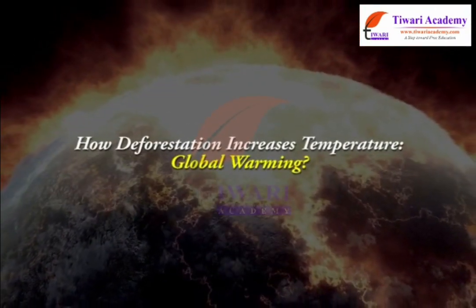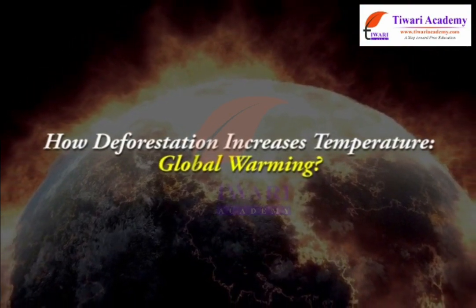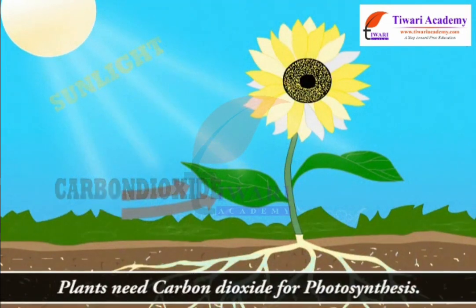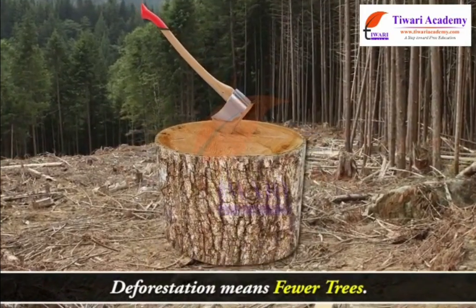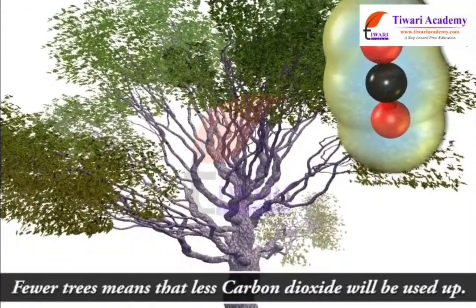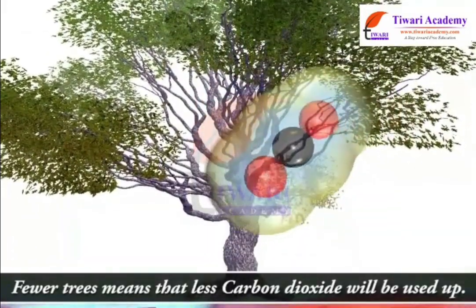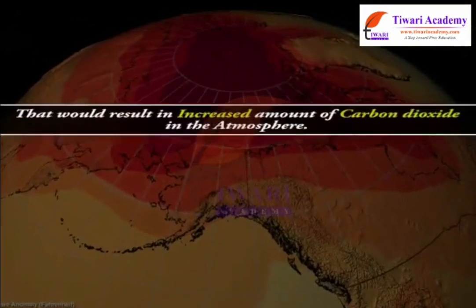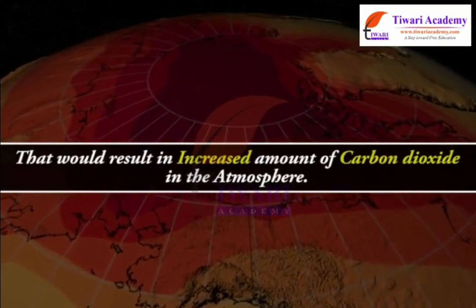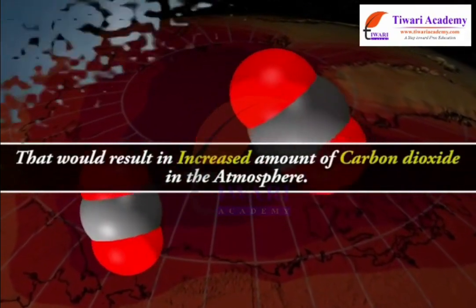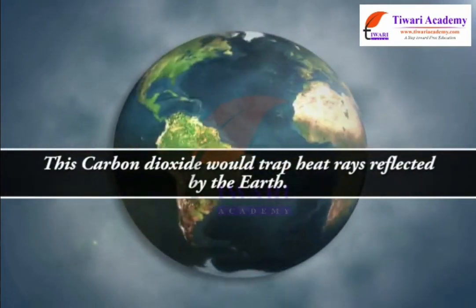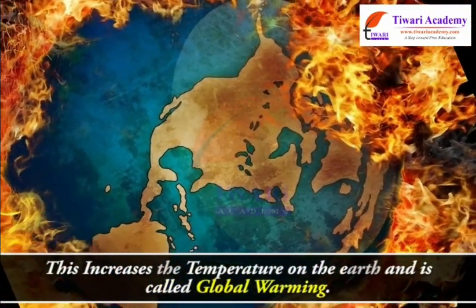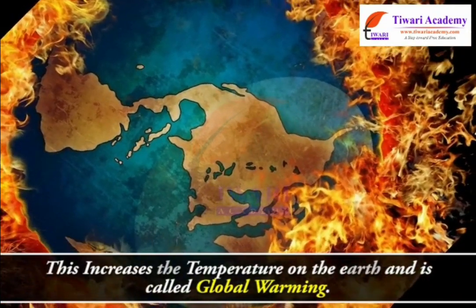How does deforestation increase temperature and cause global warming? Plants need carbon dioxide for photosynthesis. Deforestation means fewer trees, which means less carbon dioxide will be used up. This results in an increased amount of carbon dioxide in the atmosphere, which traps heat rays reflected by the earth, increasing the temperature — this is called global warming.